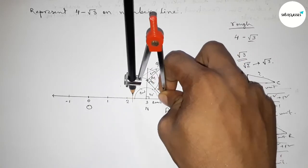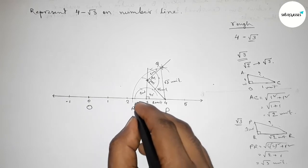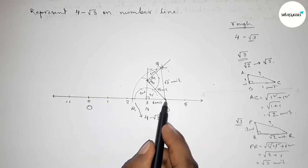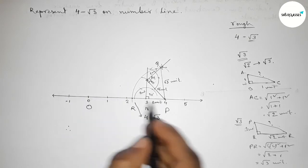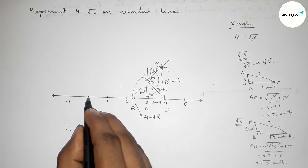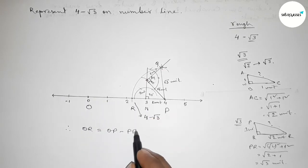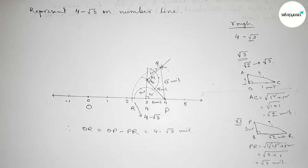Drawing an arc that meets the number line at a point, taking this as point R. This is the point 4 minus root 3 on the number line. Here OP equals 4 and NP equals root 3, so OR equals OP minus NP, which equals 4 minus root 3 units. So OR equals 4 minus root 3 units. That's all, thanks for watching.